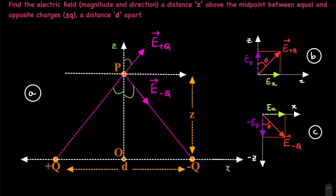So let's dive right in. Here we see a problem and a few pictures. Picture A is a pictorial representation of the textual problem. What we see here is two charges, plus q and minus q, separated by a distance d, and we need to find the field at point P, which is shown here.